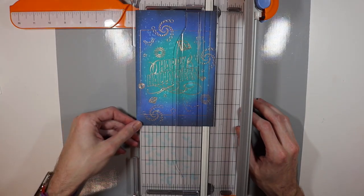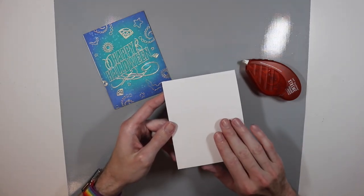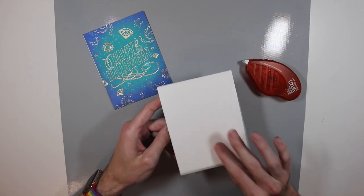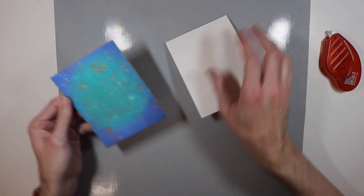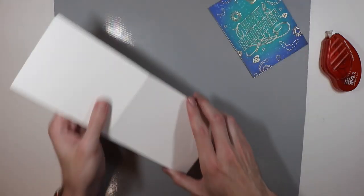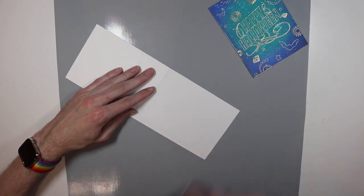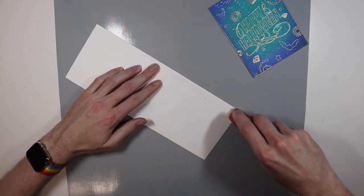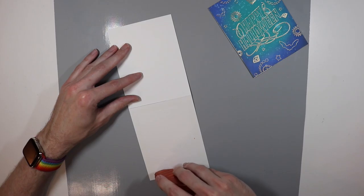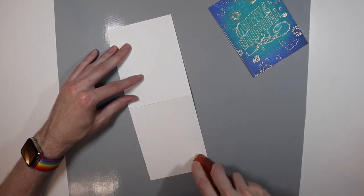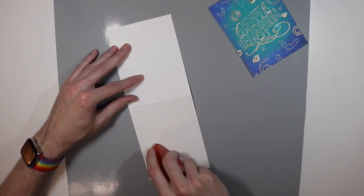All right, it's time to assemble everything. I have a piece of 110-pound Neenah Solar White Classic Crest card stock—this is what I always use for card bases. I am going to apply some Tombow extreme adhesive to my card base because I really want to make sure that this stays in place. The Bristol paper has a little heft to it, so I really want to make sure it's not going to go anywhere when I put it onto my card base.